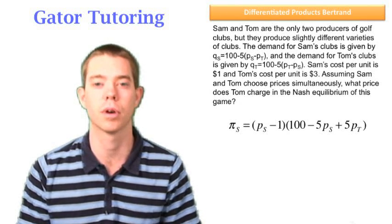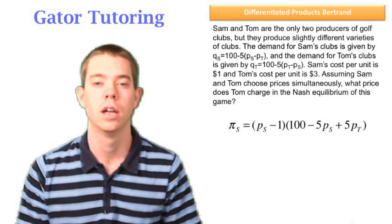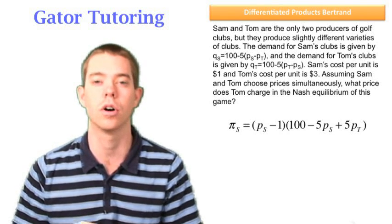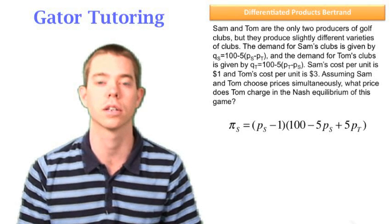We see that profit for Sam has price on the right side of our profit function. And we want to use this form of profit: price minus marginal cost, all times quantity. This is just the easiest way to look at it.